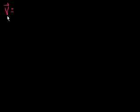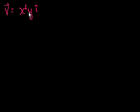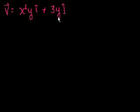So let's say I have a vector field, and just for the purposes of visualization, it could be anything. But let's say it represents the velocity of particles of fluid at any point in two dimensions. So it's going to be a two-dimensional vector field, a function of x and y. So the velocity at any point is a vector. Let's say it is x squared y î — so at any point x, y, its velocity in the x direction will be x squared y — and then its velocity in the y direction is 3y ĵ.